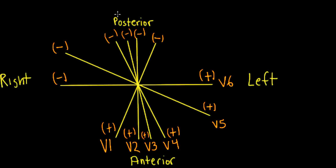In the transverse plane, we have anterior, posterior, and left and right. And we want to remember that V1 and V2 are rightward, anterior leads. And as we move to V3, V4, V5, and V6, we're going towards the left and posterior. And we can see that V2 is perpendicular to V6 and V1 is perpendicular to V5.